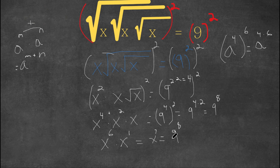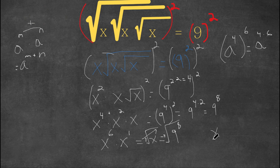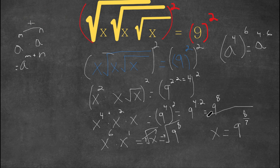Now what we're going to do is take the 7th root on both sides so that we can cancel out this exponent of 7 and just leave x as normal. So if we take the 7th root on both sides, these two just cancel out and we're left with x equals 9 to the power of 8 to the 7th root, which is the same thing as 9 to the power of 8 over 7. And this is our answer.